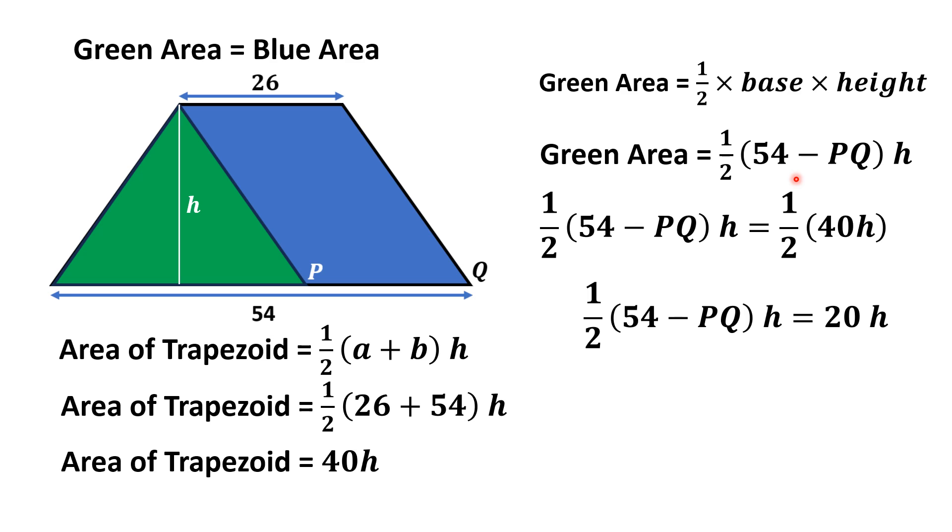From here, 1/2 times (54 - PQ) times h is equal to 20h. Multiplying both sides by 2, this 2 will cancel out.